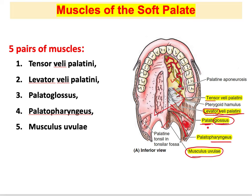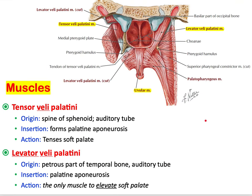Now let's look at each muscle briefly. Looking at the tensor veli palatini muscle from the back of the oral cavity — as if you're standing in the pharynx looking forward — you can see the uvula from behind. This posterior view shows the back of the oral cavity and the opening of the nasal cavity.